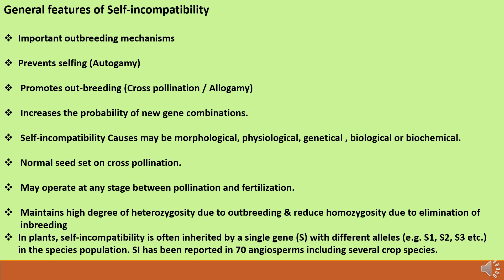General features of self-incompatibility: it is an important outbreeding mechanism because it prevents selfing or autogamy and promotes cross-pollination or allogamy, which is very important in hybrid seed production. Self-incompatibility increases the probability of new gene combinations, and the causes may be morphological, physiological, genetical, biological, or biochemical factors. There is normal seed set on cross-pollination but no seed set after self-pollination. Self-incompatibility may operate at any stage between pollination and fertilization, and there is a high degree of heterozygosity maintained due to outbreeding, which reduces homozygosity by eliminating inbreeding.